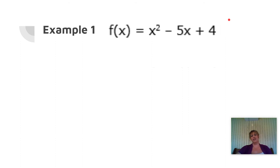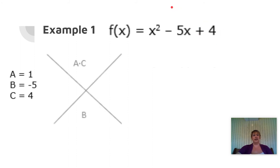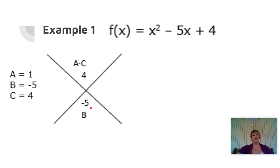Our first example: f of x equals x squared minus 5x plus 4. We're going to factor that in order to solve it. To factor, we need to find our a, b, and c values. A is the coefficient of x squared, that's 1. B is the coefficient of x, so that's negative 5. And c is the constant term, so that's positive 4. We're going to draw our x puzzle — a times c goes in the top, so 1 times 4 gives me 4, and then our b value goes in the bottom, so that's negative 5.